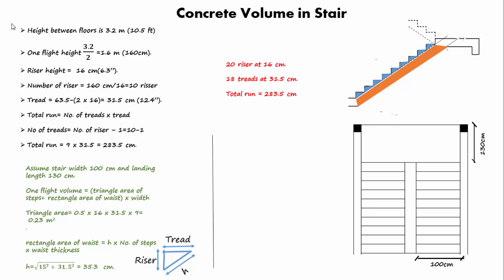The hypotenuse of the step can be found by calculating the square root of 16² + 31.5², which equals 35.3 cm. We also need to find the waist thickness using the ACI code recommendation. Waist thickness equals (35.3 × 9 + 130) ÷ 20, which equals 22.3 cm. We will take it as 22 cm.